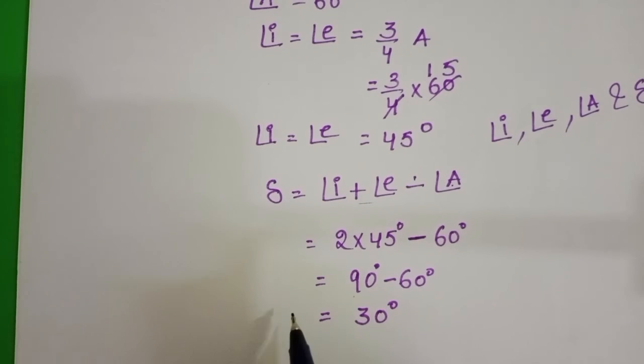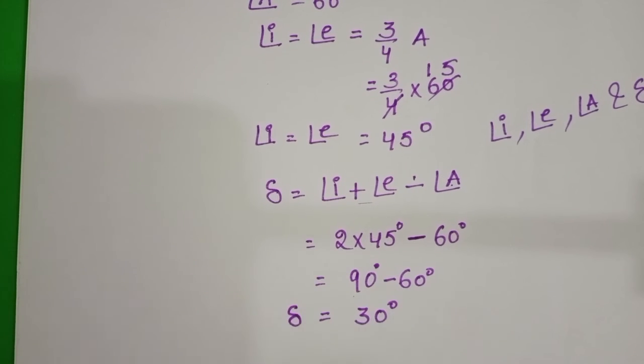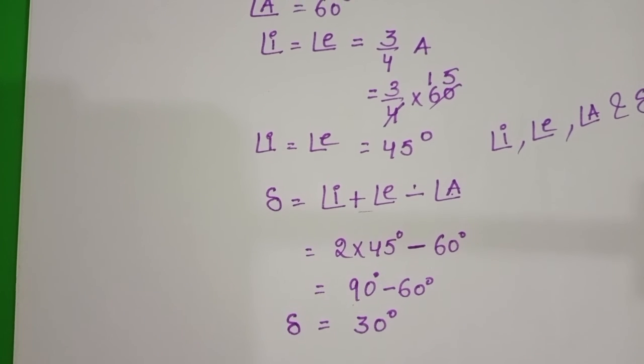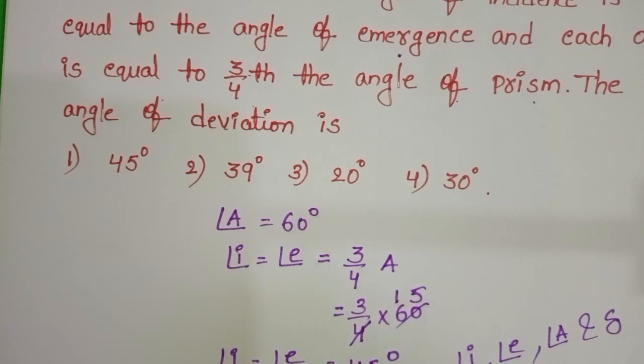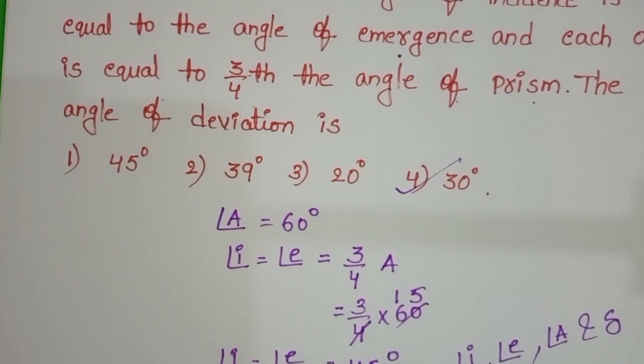The angle of deviation is equal to 30 degrees. Checking the given options, the fourth option is correct.